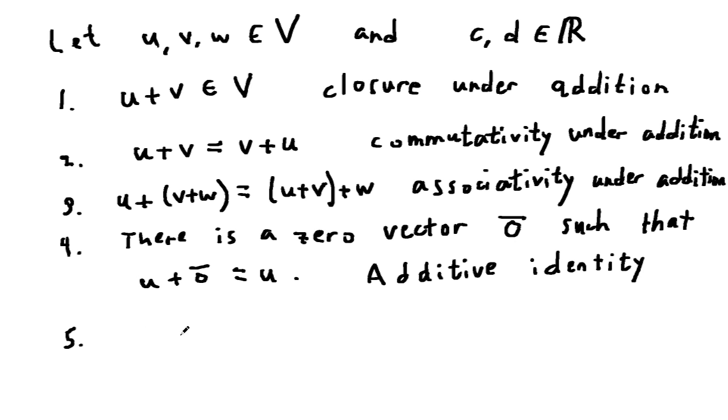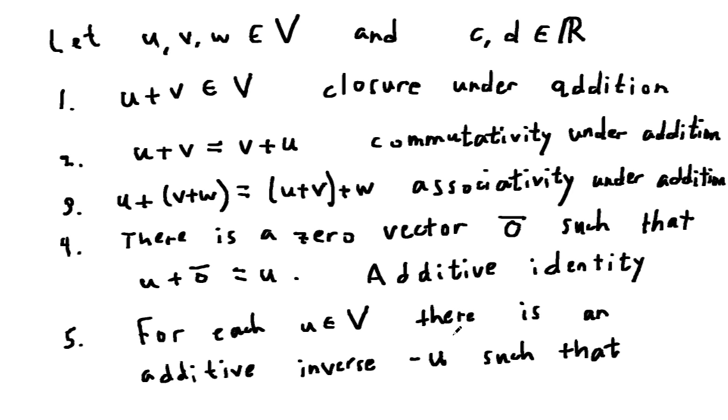The fifth property says that for each element u in V, each vector u in V, there is an additive inverse denoted minus u, such that u plus minus u gives you zero.